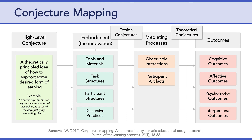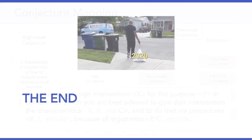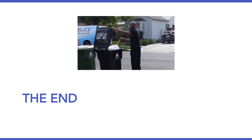So that is conjecture mapping. These elements — embodiments, mediating processes, and outcomes — provide the structure for mapping specific, testable conjectures and the relations among them. Using conjecture mapping helps design researchers focus simultaneously on understanding the design intervention and its theoretical understanding. I believe it's going to help all of you flesh out the rest of your design arguments. Our focus this week will be on design and specifically drilling down and specifying our conjecture map. Have a great week and I'll see you in Canvas.